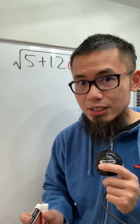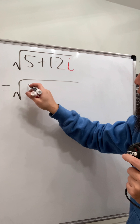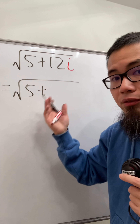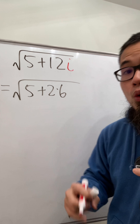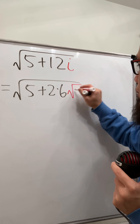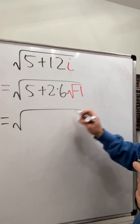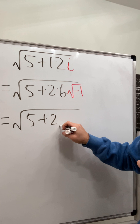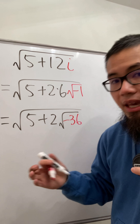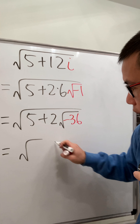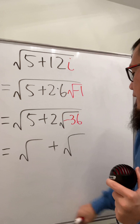Here we are going to find out the principal square root of 5 plus 12i. First we have to write this: we have the square root of 5, still have the plus, but for the 12 we look at 2 times 6 which gives 12. We also know i is the same as square root of negative 1. Then we bring the 6 inside the square root and get square root of 5 plus 2 times the square root of negative 36. Then we open two square roots with the plus in between and think about two numbers that multiply to negative 36.